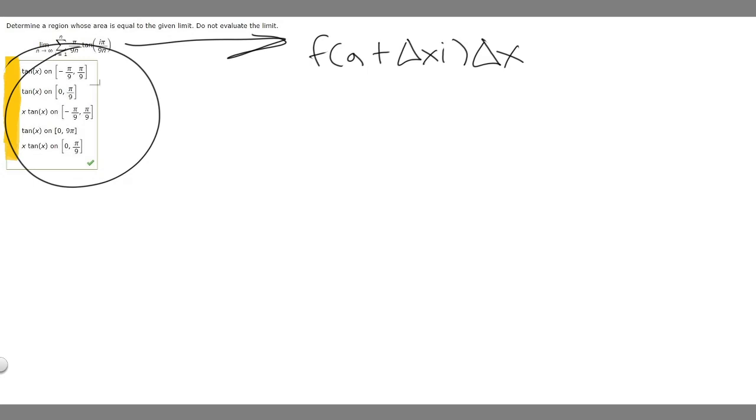Let's first look at this part right here. This is going to be our delta x, because you can see that we have this whole thing multiplied by this, which is the same thing as this. So delta x is going to have to equal pi over 9n.